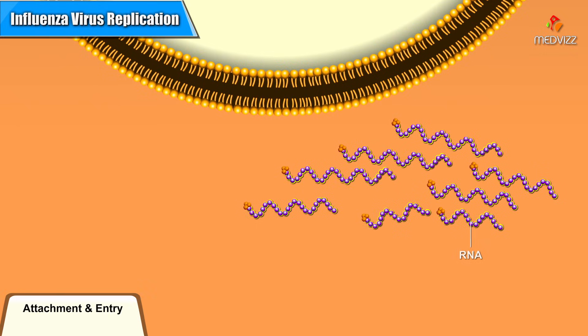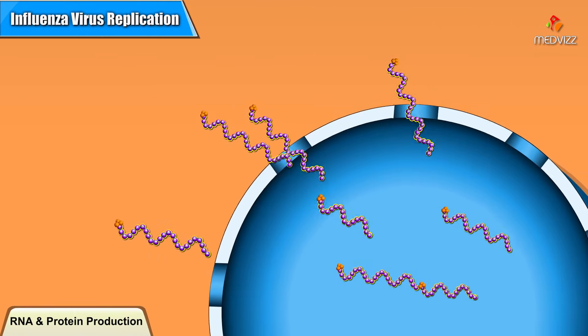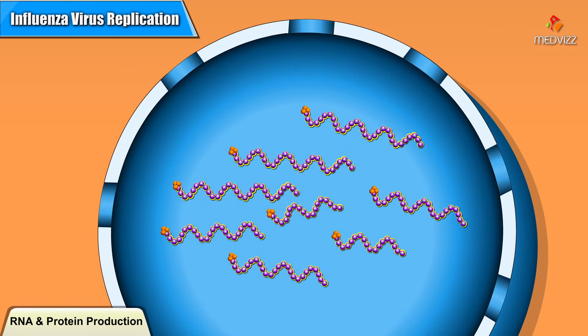The eight RNA segments of the influenza genome are covered with nucleocapsid proteins, abbreviated NP, and attached to several other proteins that make up the viral RNA polymerase. These RNA protein units enter the nucleus via the nuclear pores.